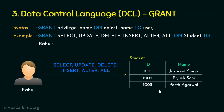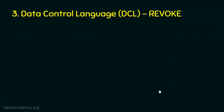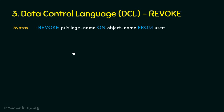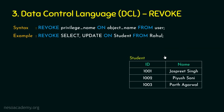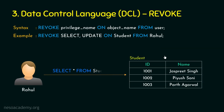Now let's focus on REVOKE. After granting privileges, if the database administrator no longer wants a user to have a privilege, they can revoke it. The syntax is: REVOKE privilege_name ON object_name FROM user. Note that GRANT uses TO user, while REVOKE uses FROM user. For example: REVOKE SELECT, UPDATE ON student FROM Rahul — meaning Rahul will no longer be able to SELECT or UPDATE on that table.